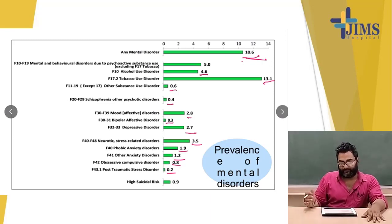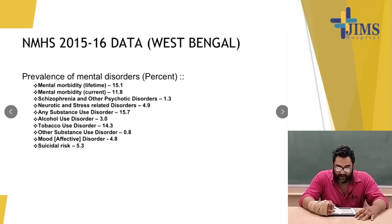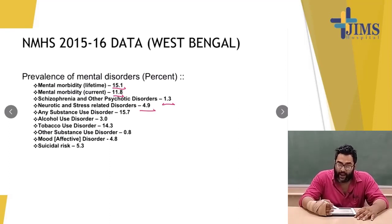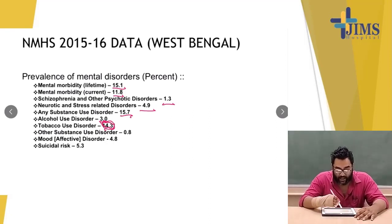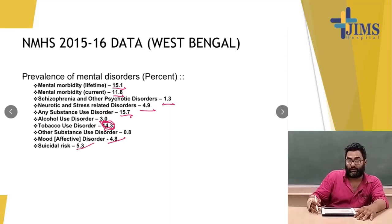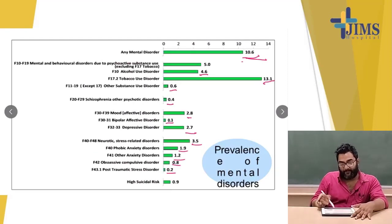From the NMHS 2015-2016 data, the prevalence of mental morbidity lifetime was 13.7%, and current morbidity was 11.8%. Schizophrenia and other psychotic disorders were 1.3%, neurotic and stress disorders were 4.9%, and any substance use disorder was 15.7%. Alcohol use disorder was 3%, tobacco was 14.3%. Other substance use disorder was 0.8%, mood disorders were 4.8%, and suicidal risk was 5.3% — much higher than the total Indian population figure of 0.9%.